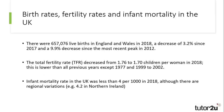These measures are important as they give us indications as to how the population might change. In recent years there has been a decrease in the number of children born in the UK. In 2018 just over 650,000 children were born in the UK, but this was a 3% decrease on the previous year and almost a 10% decline since the last increase in new births in 2012.